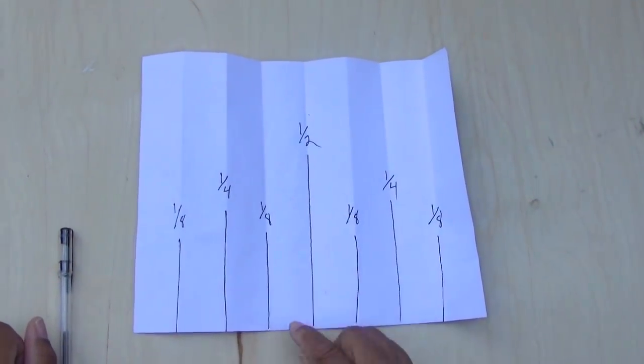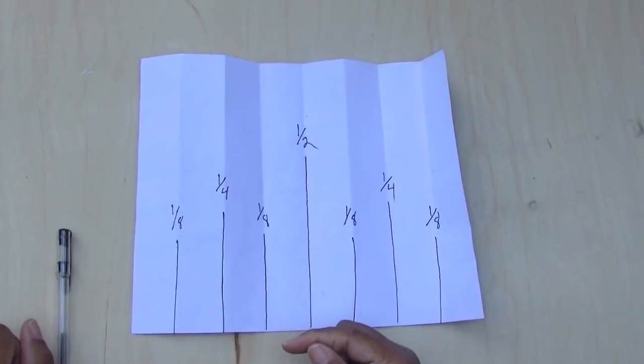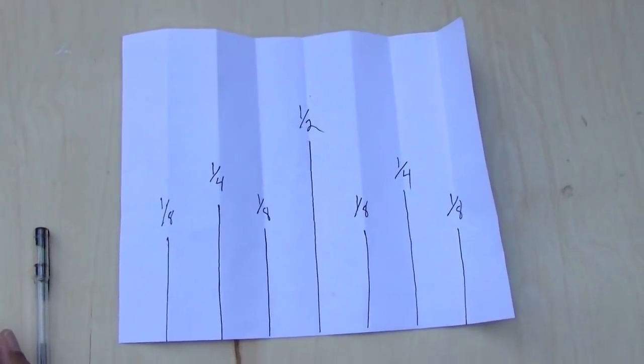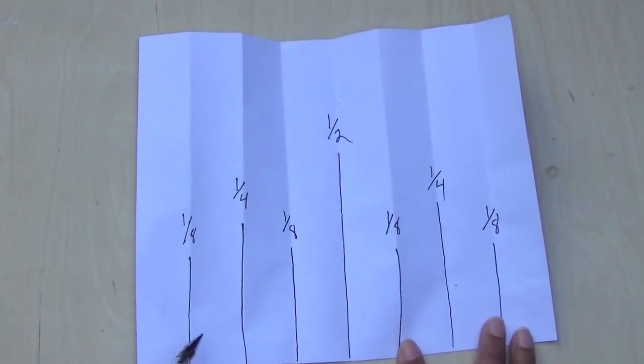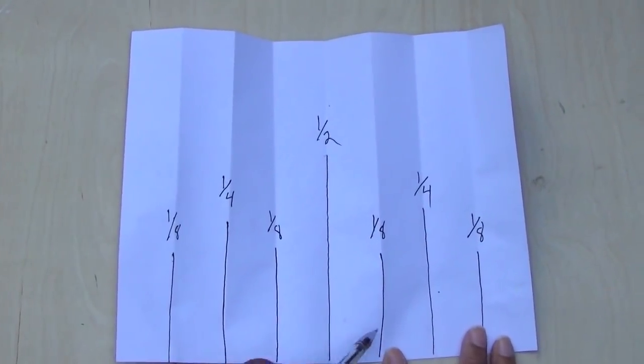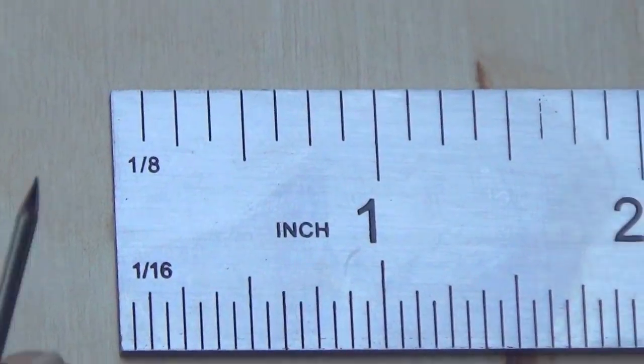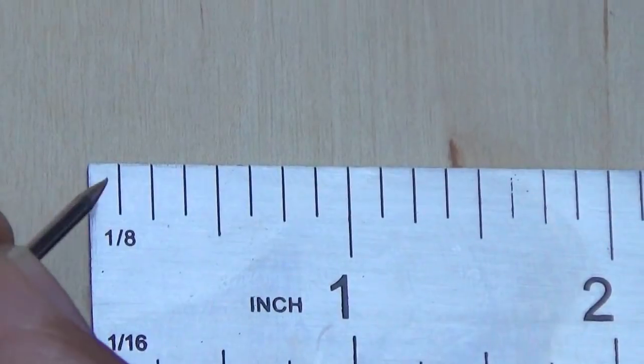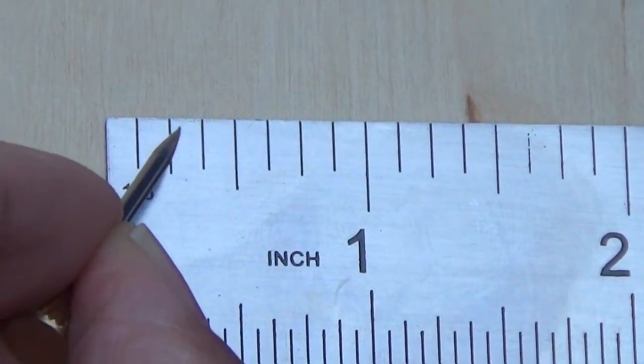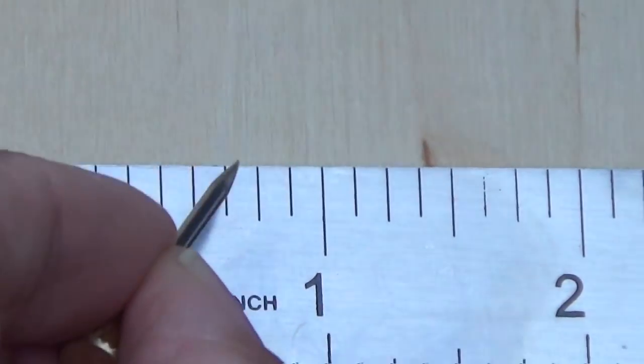But this is not the way rulers or tape measures read exactly. Each one of these pleats represent an eighth of an inch. Each one of them. And if we were to take our ruler, we would read one pleat, two pleat, three pleat, four pleat, five, six, seven, and eight.